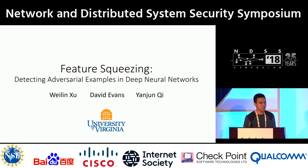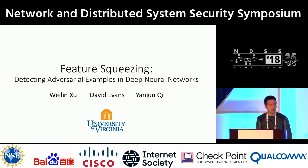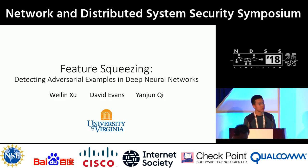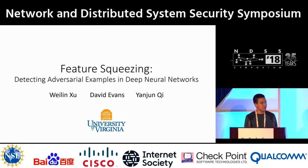I'm Wei-Ling, a PhD student at the University of Virginia. Today I'm going to present our recent work on detecting adversarial examples. This work is co-advised by Professor David Evans and Professor Yan Jun Qi.